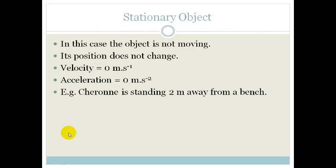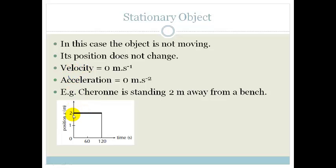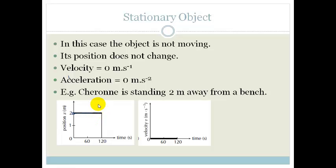Let's look at an example. In this case we've got Chiron standing two meters away from a bench. So her position versus time graph is going to start at two because she started two meters away from the bench, and it stays at two because she's not moving. Her velocity versus time graph is zero.